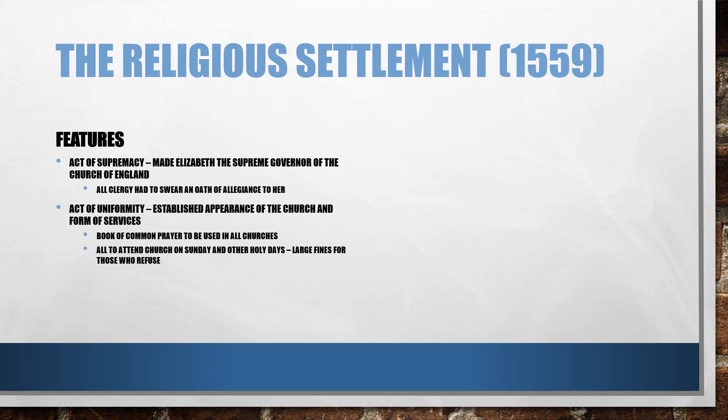The second act was the Act of Uniformity which looked at the establishment of the appearance of the church and what form services would undertake. The Book of Common Prayer was to be used in all churches, but the language within the Act of Uniformity was incredibly vague and open to interpretation. It also required everyone to attend church on a Sunday and other holy days, for example Good Friday and Easter Sunday, and there were large fines for those that refused to attend.